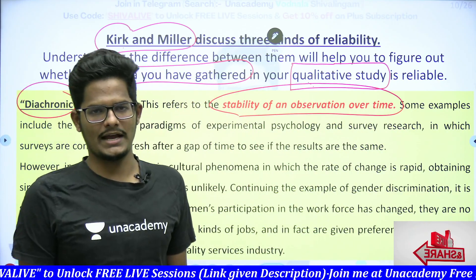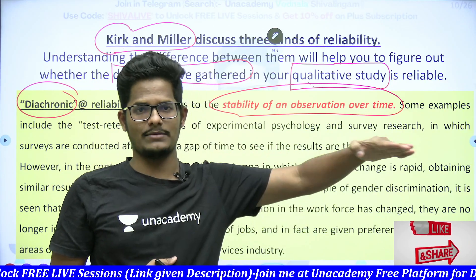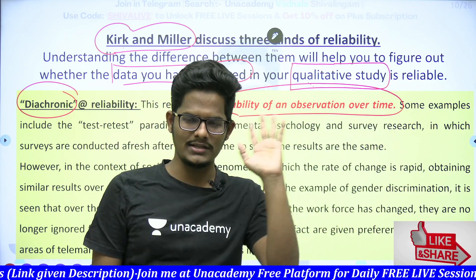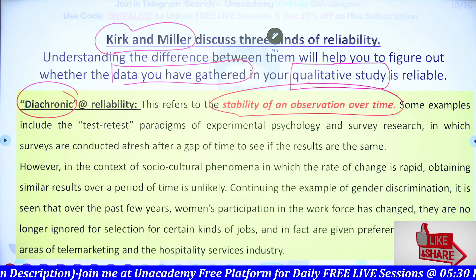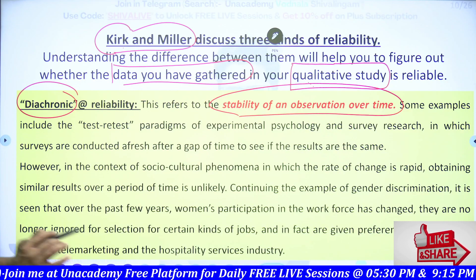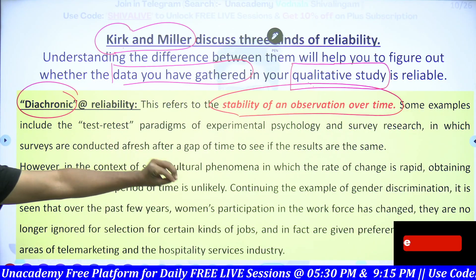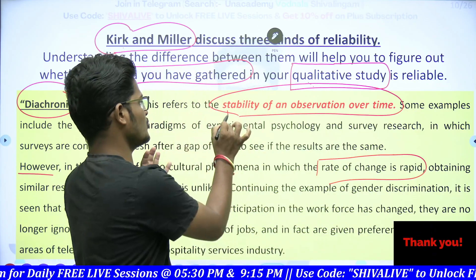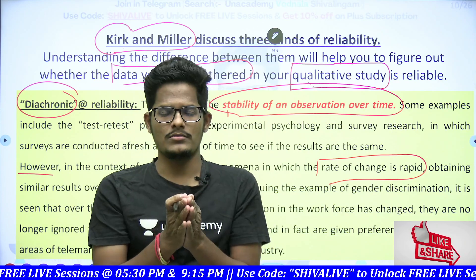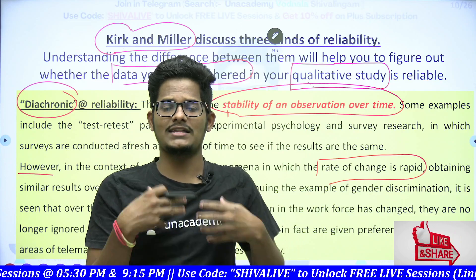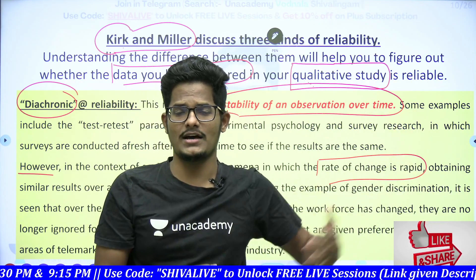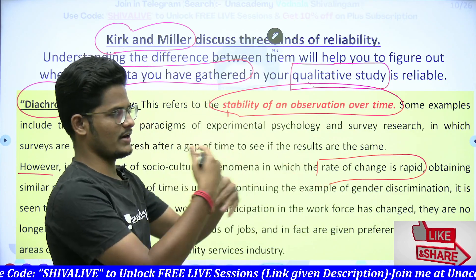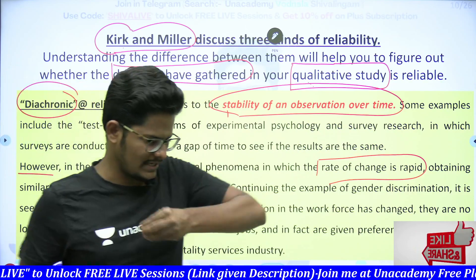Whatever observation we are making has to maintain stability during different time periods. As time moves on, it has to maintain stability — only then is it reliable. Examples include test-retest in experimental psychology and survey research. In the context of socio-cultural phenomena where the rate of change is rapid, things change rapidly and stability is lost. For example, we were not that much habituated towards digital activities previously in the last 5 or 10 years, but now everything is being digitalized. That means over a period of time, as the rate of change is happening rapidly, the obtained results are also changing rapidly.